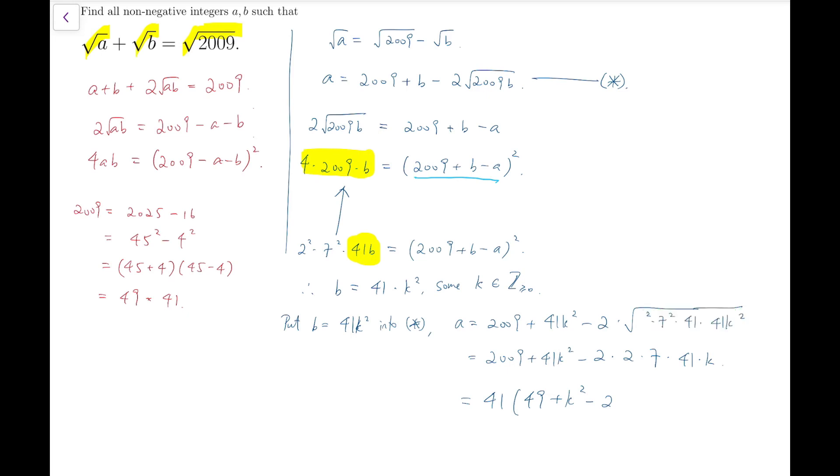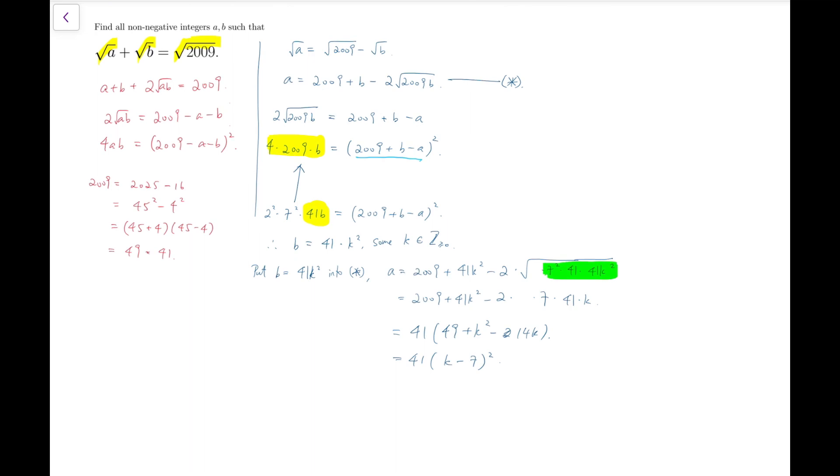Let me check whether anything went wrong. The two squares should not be inside. Let me label this again. So that should be 28k, and that is 41 times (k minus 7) whole squared.